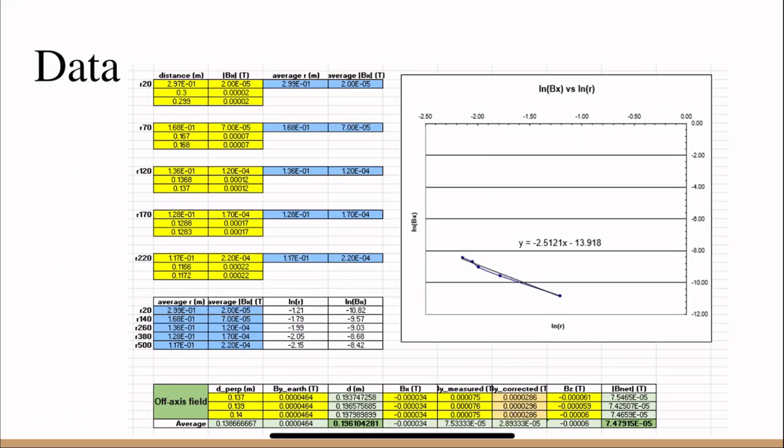So this is the data and this is the spreadsheet that I was referencing in the previous slide. We can find the distance from the magnetometer and the bar magnet for different x component values, and we can see the graph that those values make on the right.